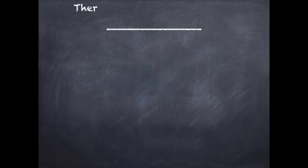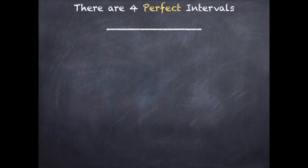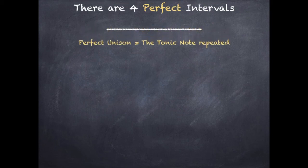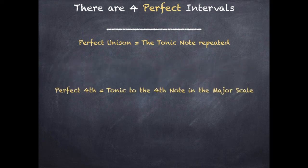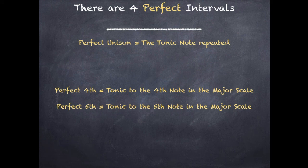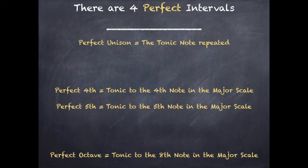There are four types of perfect intervals: perfect unison, where the tonic note is repeated; perfect fourth, the tonic note to the fourth note in the major scale; perfect fifth, the tonic to the fifth note in the major scale; and a perfect octave, the tonic to the eighth note in the major scale.